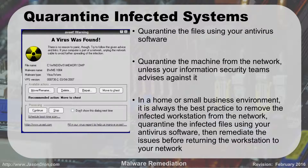They'll usually try to quarantine it but keep it online in a different way rather than just unplugging from the network completely. In a home or small business environment, it is best practice to remove the infected workstation from the network. If it's a wired network, unplug the network cord; if it's wireless, turn off the wireless receiver. This will quarantine the computer and files from spreading throughout the network, and you'll be able to remediate the issue before returning it to work.